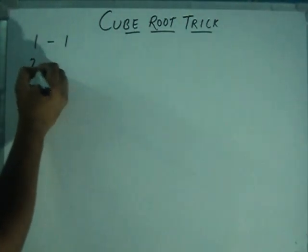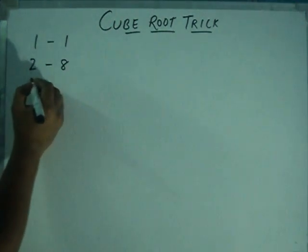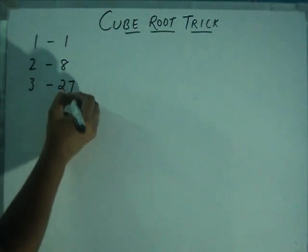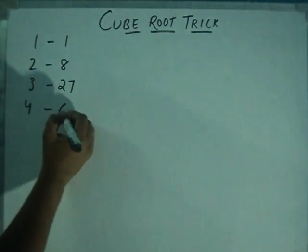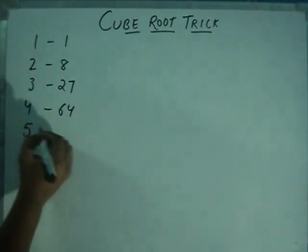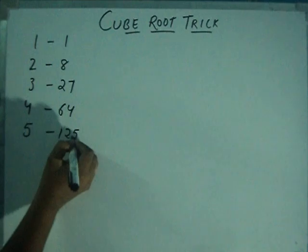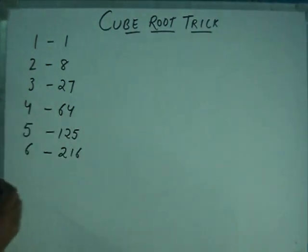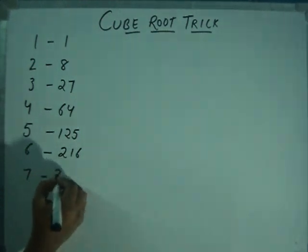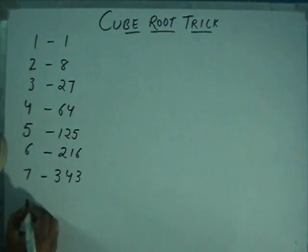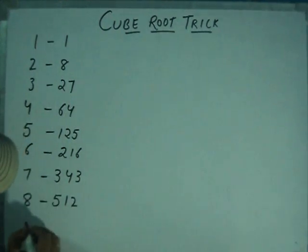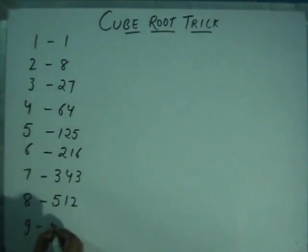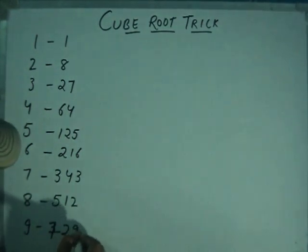Like 1 for 1, 2 for 8, 3 for 27, 4 for 64, 5 for 125, 6 for 216, 7 for 343, 8 for 512, and for the last one, 9, it's 729.